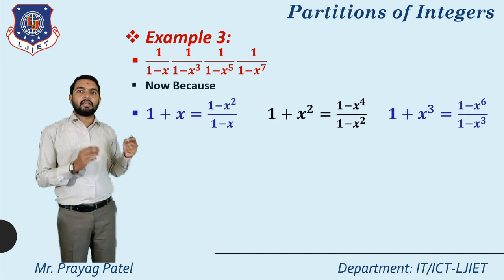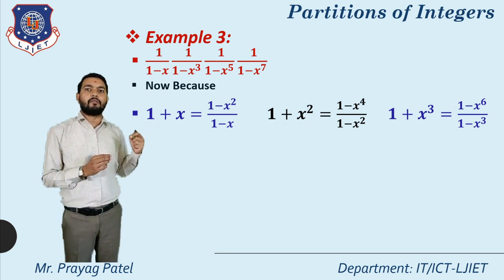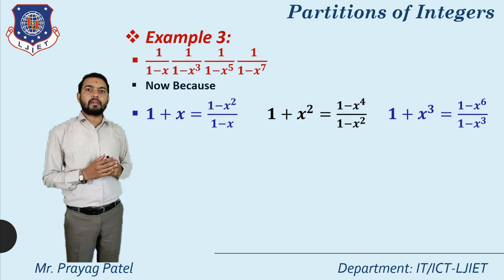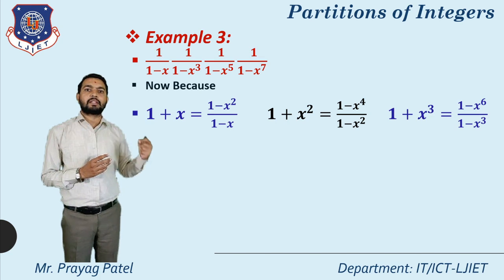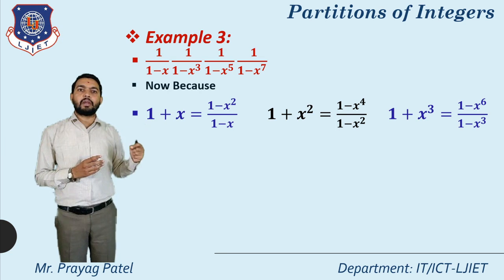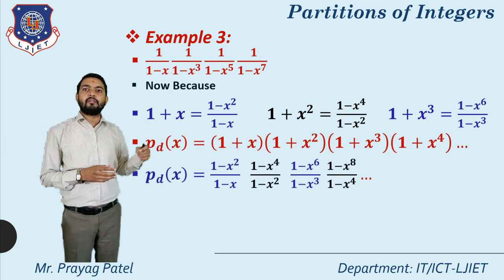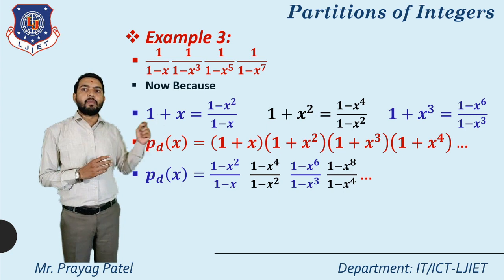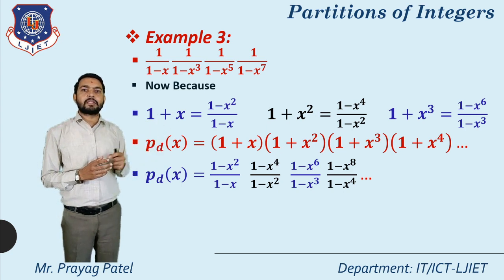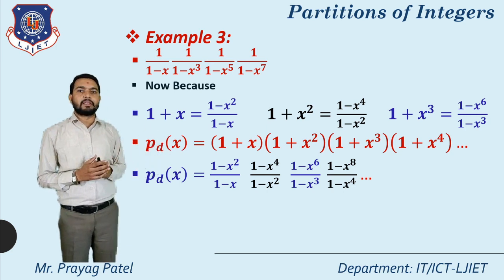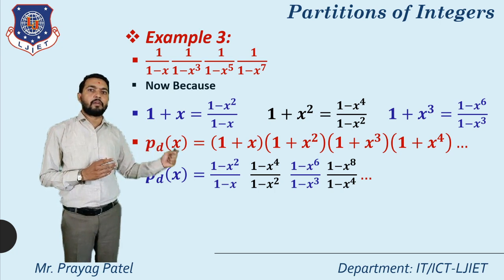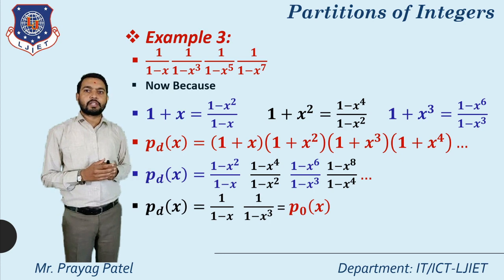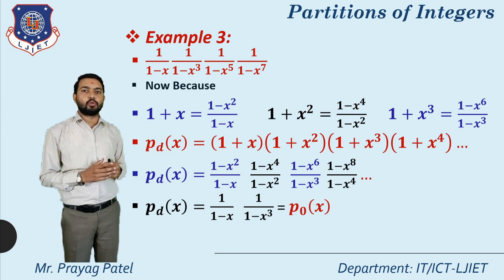Using the identity 1+x = (1-x²)/(1-x), 1+x² = (1-x⁴)/(1-x²), and 1+x³ = (1-x⁶)/(1-x³), we substitute into p_d(x) = (1+x)(1+x²)(1+x³)(1+x⁴).... When we solve this equation, we get p_d(x) equals 1/(1-x) times 1/(1-x³)..., which is equivalent to p_0(x). So p_d(x) equals p_0(x), proving that the number of partitions into distinct summands equals the number into odd summands.